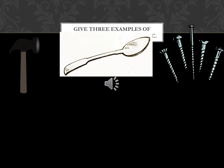Get three examples of objects that are magnetic: a hammer, a spoon, and nails.